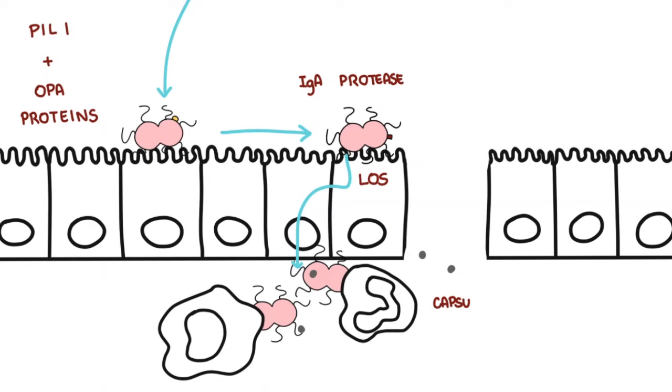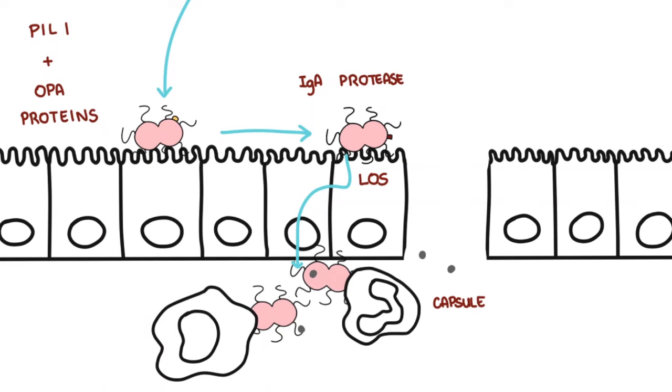Neisseria gonorrhea also has a capsule which helps evade phagocytosis, basically hide or not be phagocytized by the macrophages and neutrophils. They also contain porin proteins, which help evade the immune system.